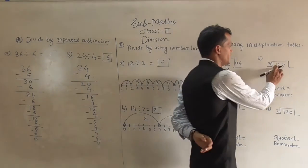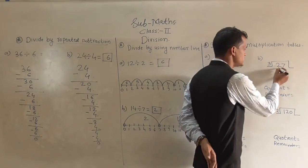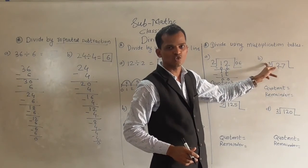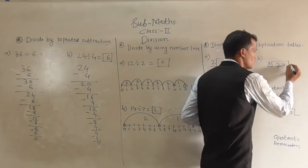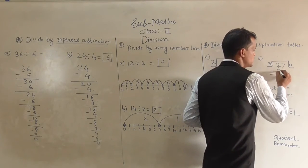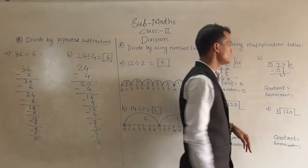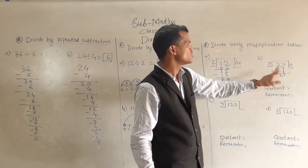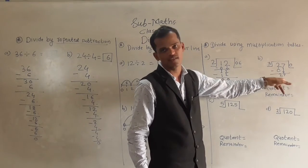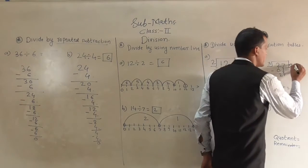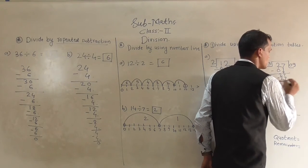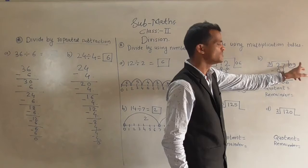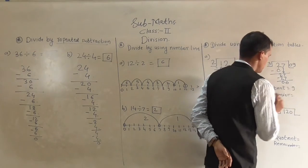Next example: 27 divided by 3. The first digit is 2, which is smaller than 3, so 2 is not divisible by 3. Write 0 in the quotient, subtract 0 from 2: 2 minus 0 is 2. Bring down 7 to form 27. Check whether 27 comes in the table of 3: yes, 3 nines are 27, so write 9 in the quotient. Subtract 27 from 27: 7 minus 7 is 0, 2 minus 2 is 0. So the quotient is 9 and the remainder is 0.